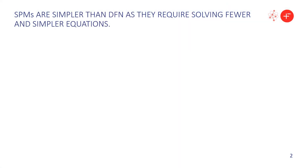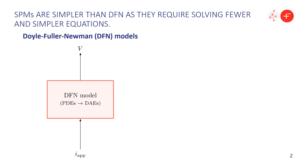The two models we want to compare here are the Doyle-Fuller-Newman model, the DFN model, and single particle models or SPMs. Looking at the DFN, if we assume that the input is the applied current and the output is the voltage, the DFN is a single block made of partial differential equations, which after discretization become a system of differential algebraic equations or DAEs. So that's a complicated step — everything is coupled together and it's a very complex problem.